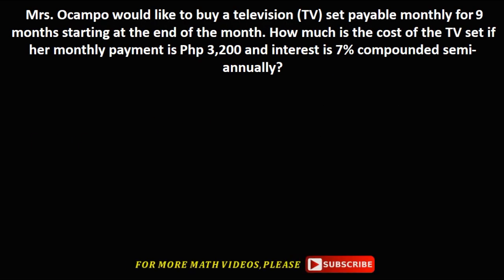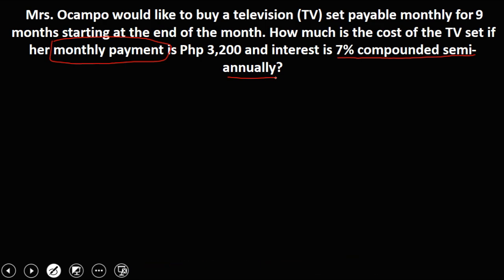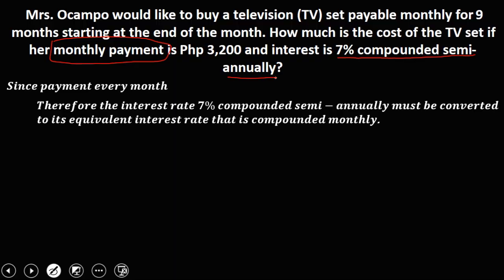We have this given. Mrs. Ocampo would like to buy a television set payable monthly for 9 months, starting at the end of the month. How much is the cost of the TV set if her monthly payment is 3,200 and the interest is 7% compounded semi-annually? Since the payment interval is monthly and the compounding period is semi-annually, this problem is a general annuity. We need to convert 7% compounded semi-annually to the interest rate compounded monthly.